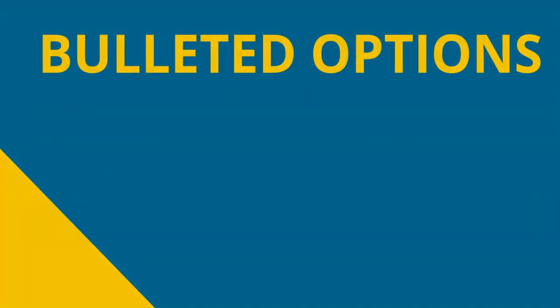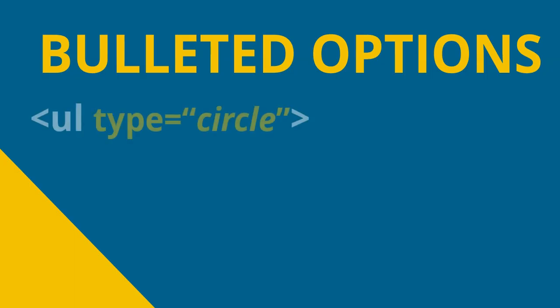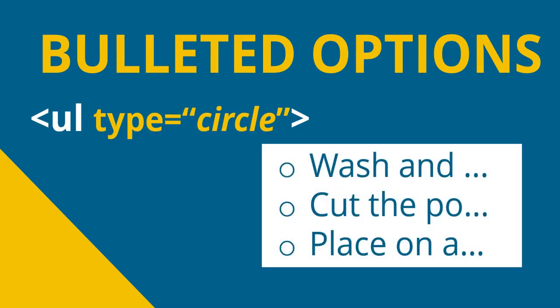There are a couple of attributes we're going to learn about these bulleted and numbered lists — actually, there's only one attribute, and that is the type option. For a bulleted list, you can specify the type is a circle, and if you do that, that will change the bullet to an open circle with nothing inside. So it's slightly different to the default one.